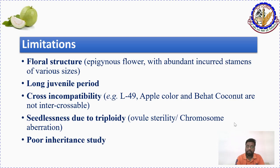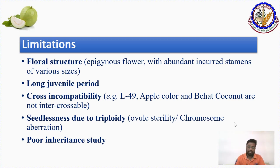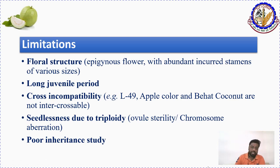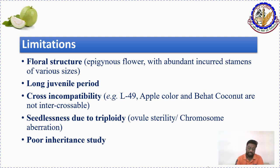The second limitation is a long juvenile period. When raising a population from seedlings, guava has a very long juvenile period, making it time-consuming to evaluate progenies. Techniques like marker-assisted breeding are yet to be standardized. Cross incompatibility is also there — for example, L-49, Apple Color, and Bath Coconut are not cross compatible. Seedlessness due to triploidy is another problem, as triploids produce no seeds, making it difficult to predict breeding outcomes.